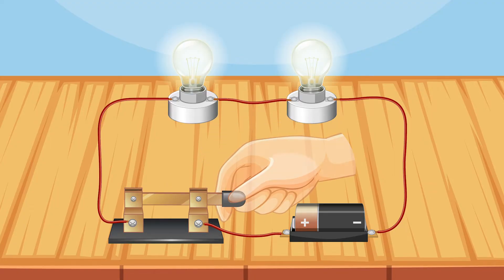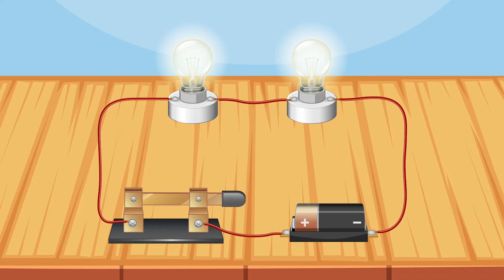You'll notice that the bulbs are not as bright as when we had just one bulb in the circuit. This happens because the two bulbs share the total voltage provided by the battery. The current has to pass through both bulbs and in the process it is divided, leading to a reduction in brightness.